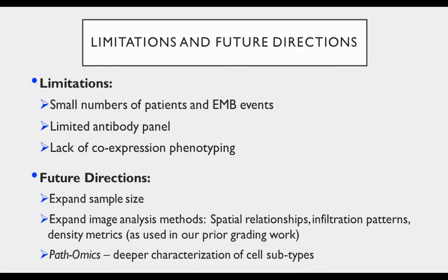In terms of future directions, we want to expand the sample size, do co-phenotyping, and expand the image analysis methods used. If you recall from our preliminary work on H&Es, we talked a lot about spatial relationships, infiltration patterns, and density metrics — where infiltrates were occurring. We didn't really perform that degree of overall image analysis and feature mapping in this work, but we can and we will, because if raw single-cell quantitation is valuable, spatially understanding that quantitation is going to be even more valuable. Pathomics approaches — deeper characterizations of cell subtypes through RNA-seq, DNA barcoding, or other higher-plex applications — would all be of significant interest.